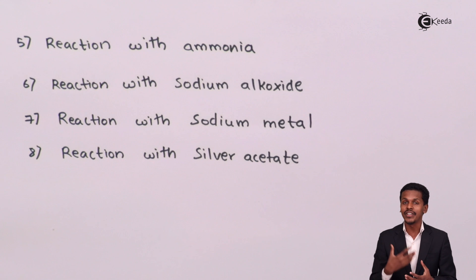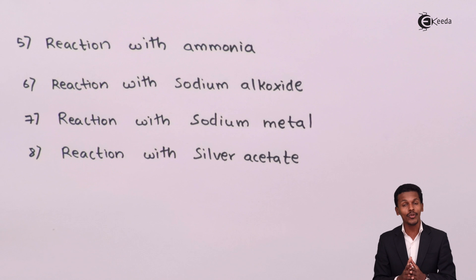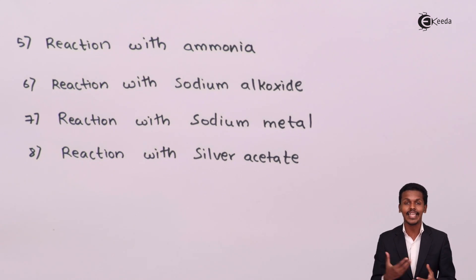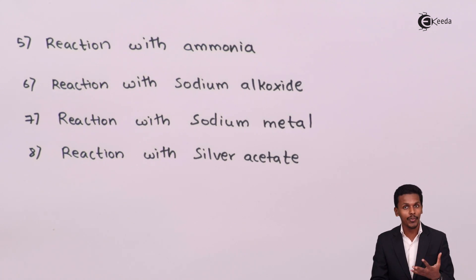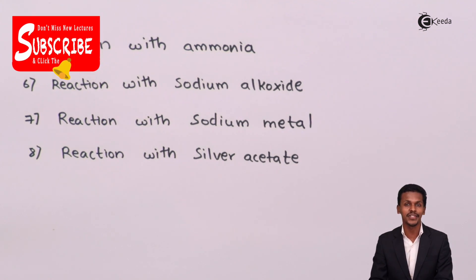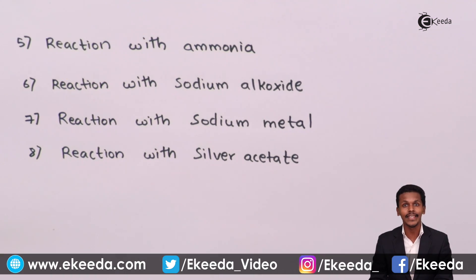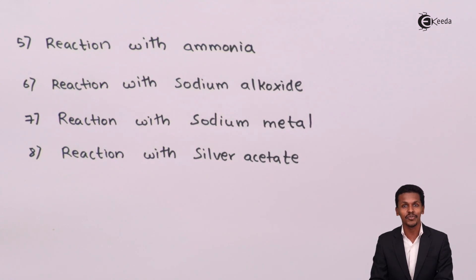Whenever an alkyl halide is treated with silver acetate, the product formed is an ester. So these are the few chemical properties shown by the alkyl halides. Please stay tuned to the next lecture where I will explain all these chemical properties in detail. Thank you friends for watching. Please share this video and don't forget to subscribe to the Ikeda channel.